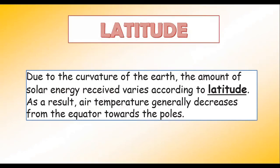Now, the Earth is round in shape. Due to the curvature of the Earth, the amount of solar energy received at different places differs — it varies according to the latitude. We have the Tropic of Cancer, Tropic of Capricorn, Arctic Circle and Antarctic Circle — these are all latitudes and they help us understand climate better.